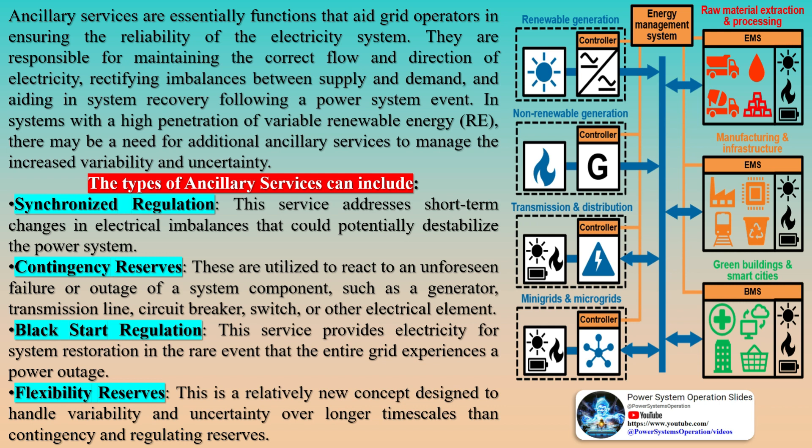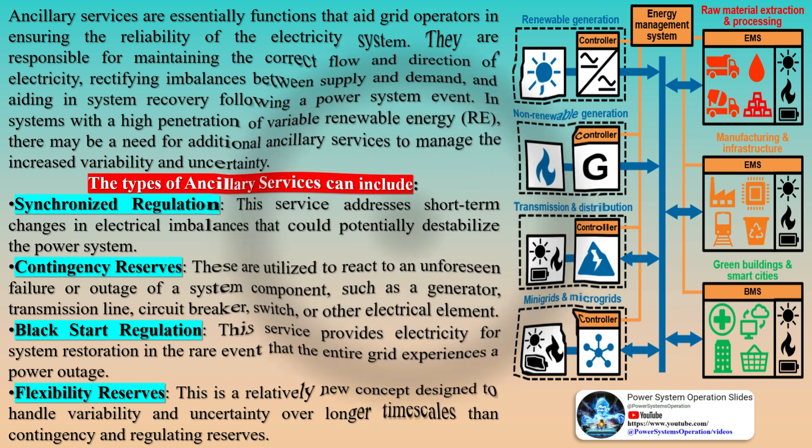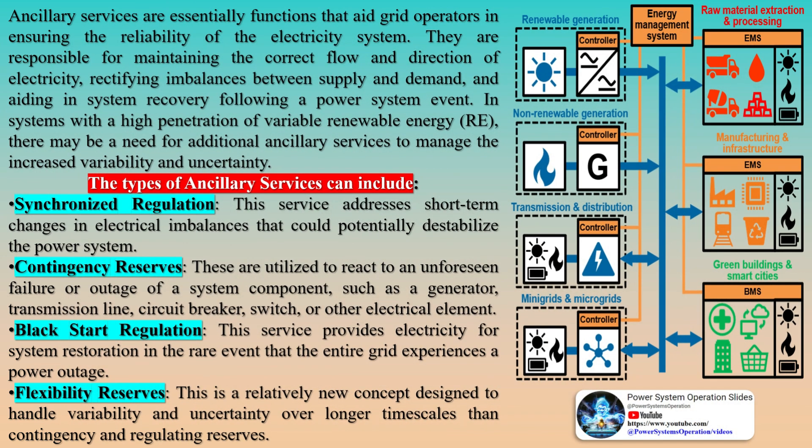The grid code for power ancillary services is a key tool for maintaining a safe, reliable, and efficient power system. It provides a common framework for all participants, ensuring that everyone plays by the same rules, and it adapts to changing conditions such as the increasing integration of renewable energy sources. Without the grid code, coordinating the many different elements of a power system would be much more difficult, and the system as a whole would be less reliable and efficient.